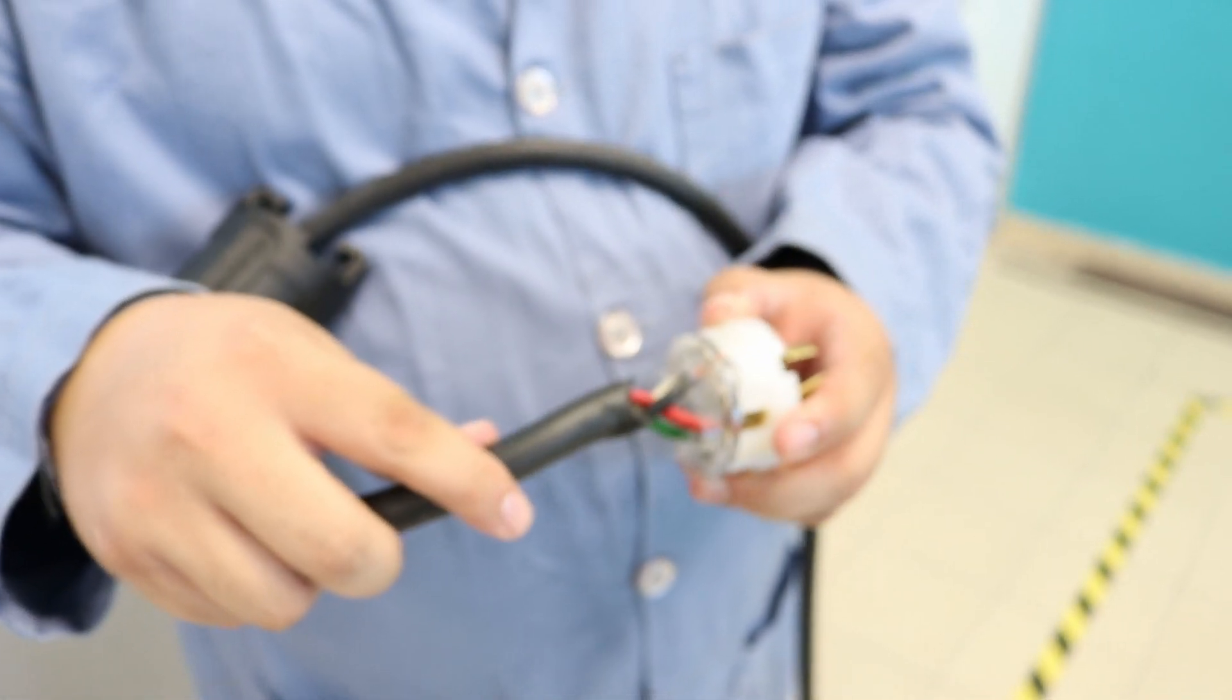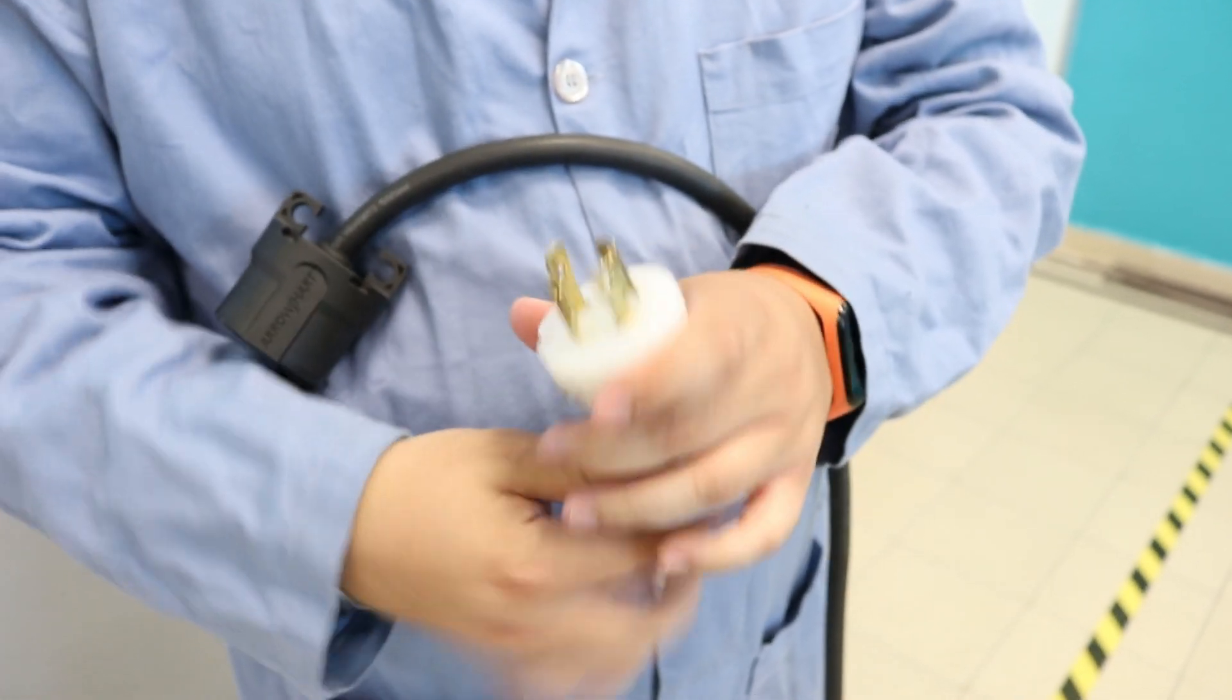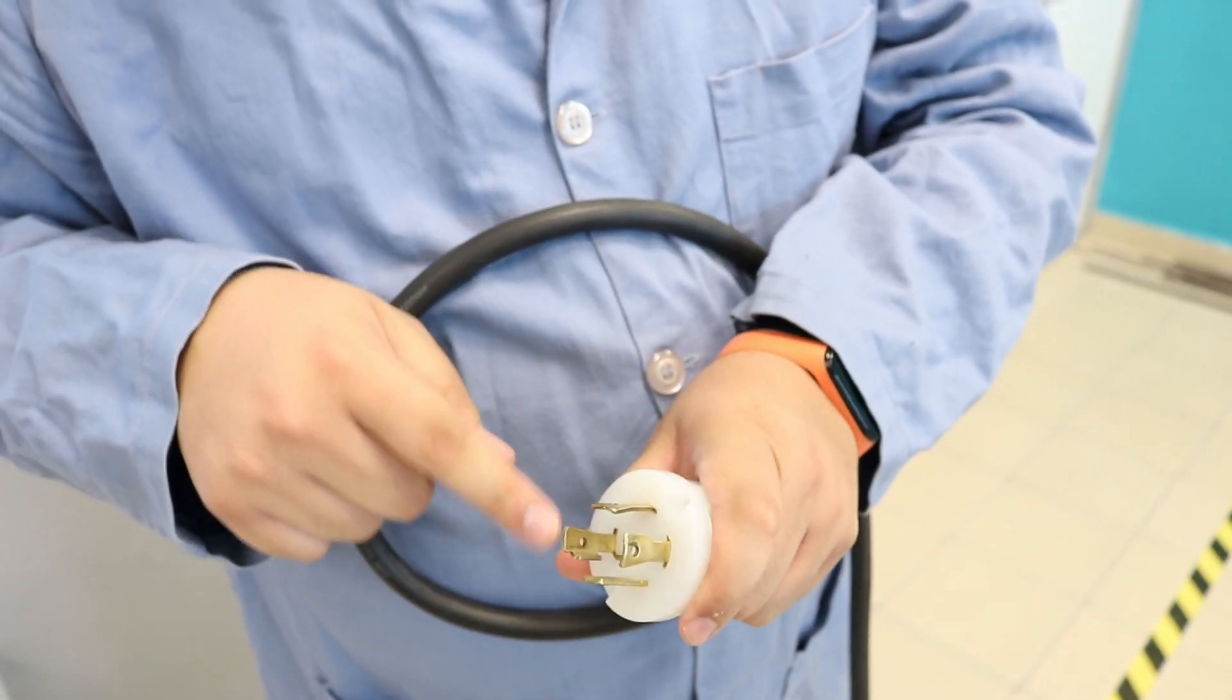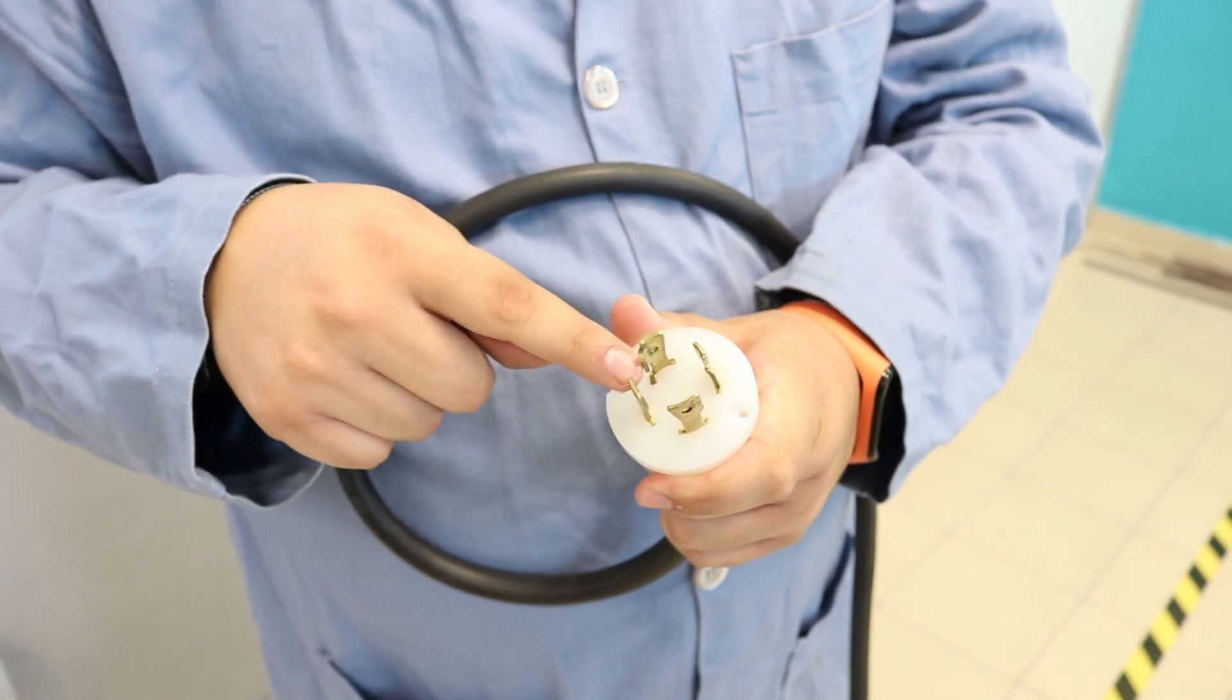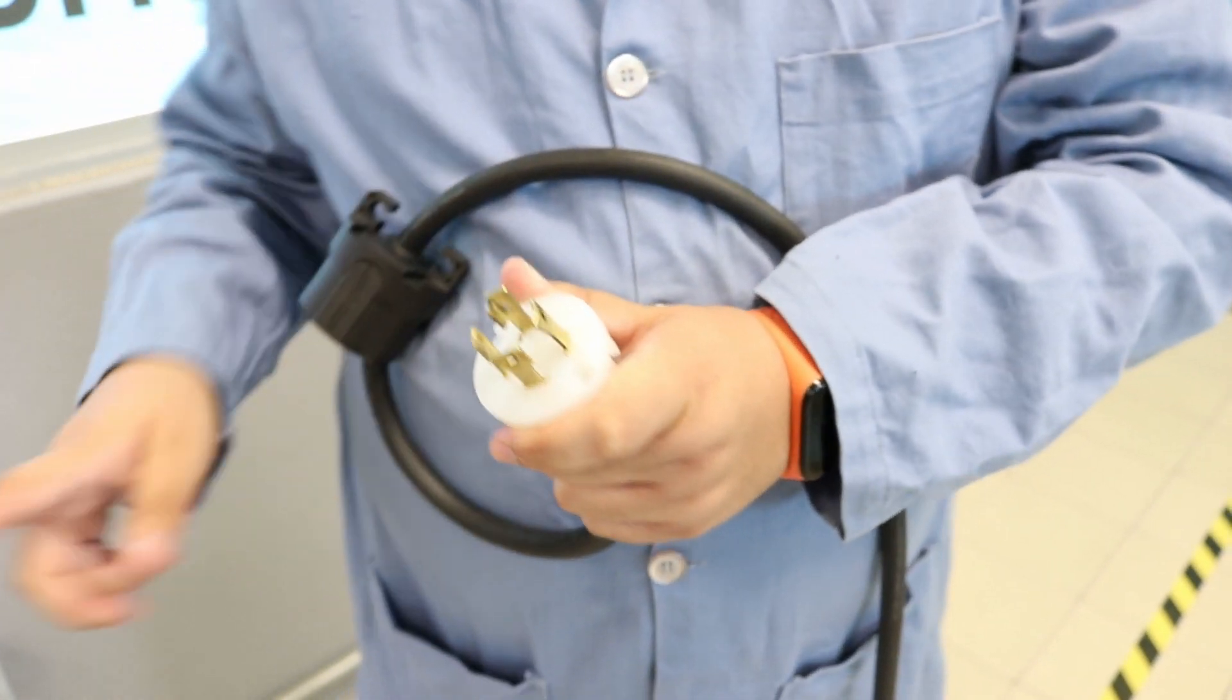If you see here, we have this little shape that will fit into the plug in the wall. Three phase connection has three lines, one neutral, and one ground, so it will be five of these.